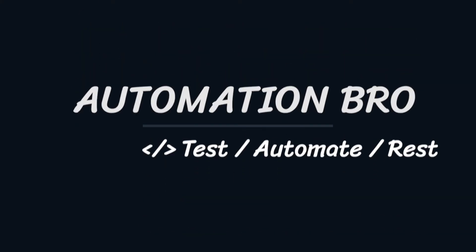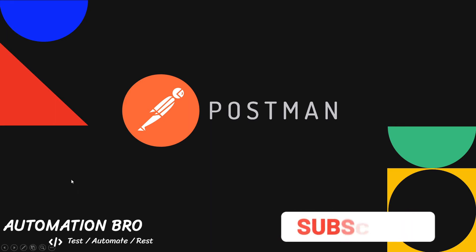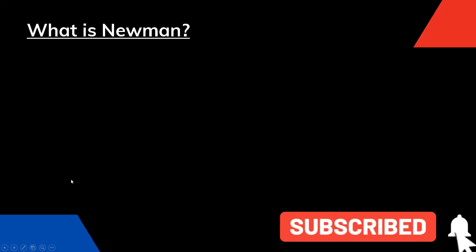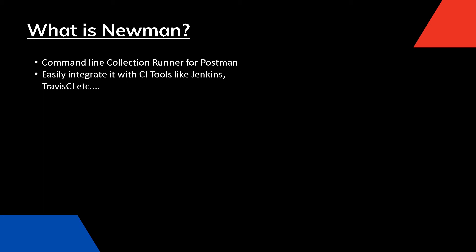In this video we will take a look at what Newman is and how we can run collections using Newman. Newman is a command line collection runner for Postman. In the previous video we looked at how to run collections using the Postman inbuilt collection runner, but with Newman it allows you to run and test a Postman collection directly from the command line. Since you can do this via command line, you can also easily integrate this with your continuous integration server as well as build systems like Jenkins and Travis CI.